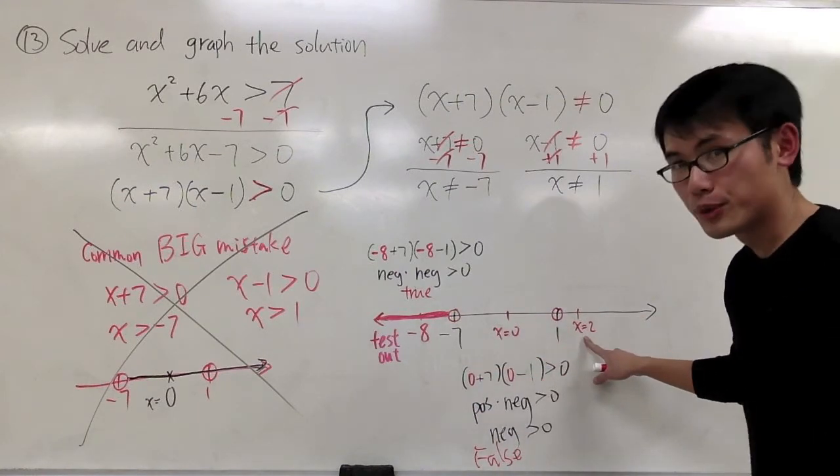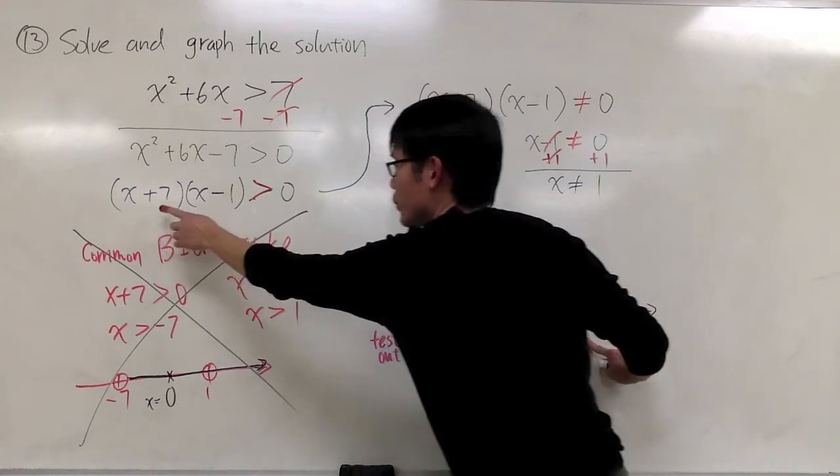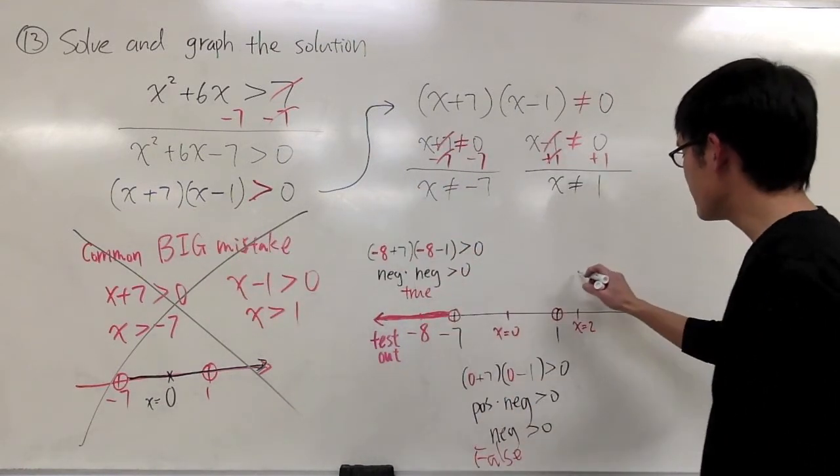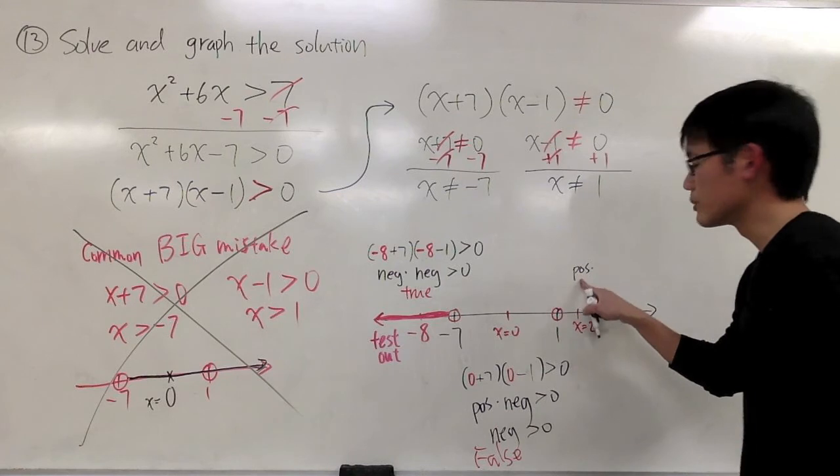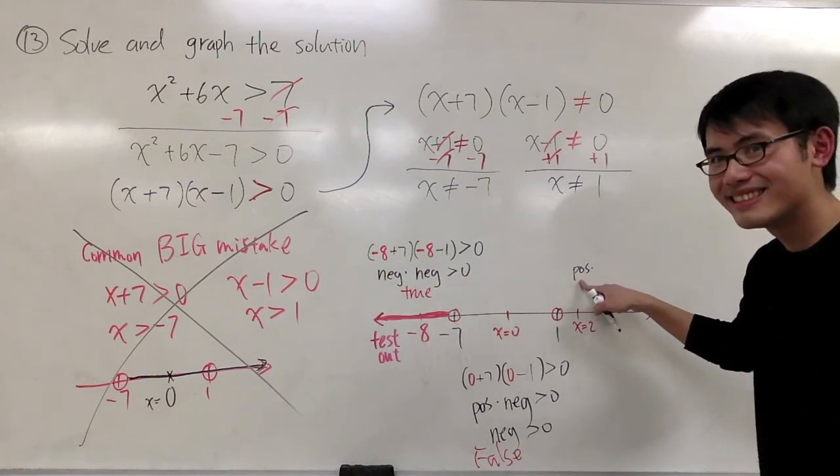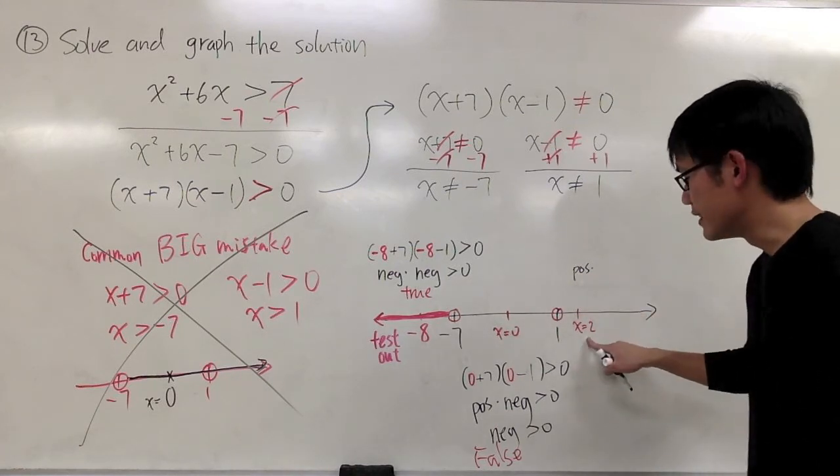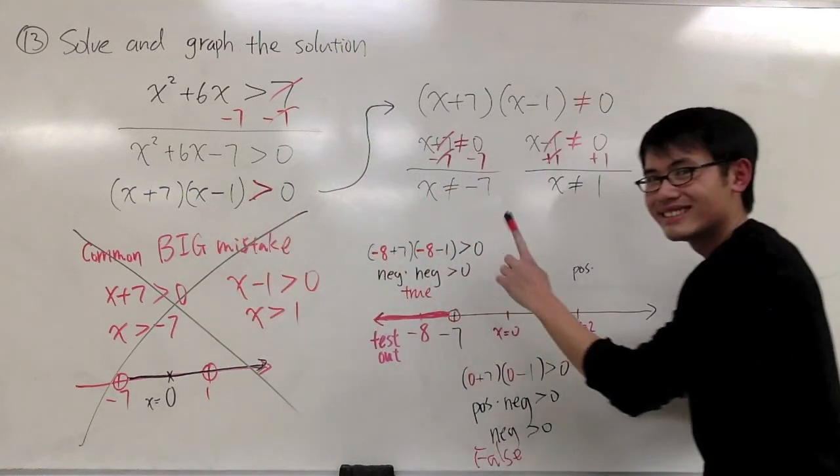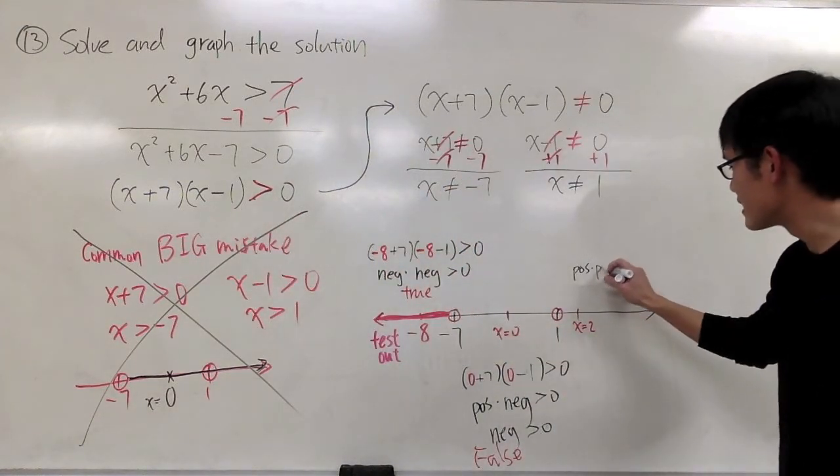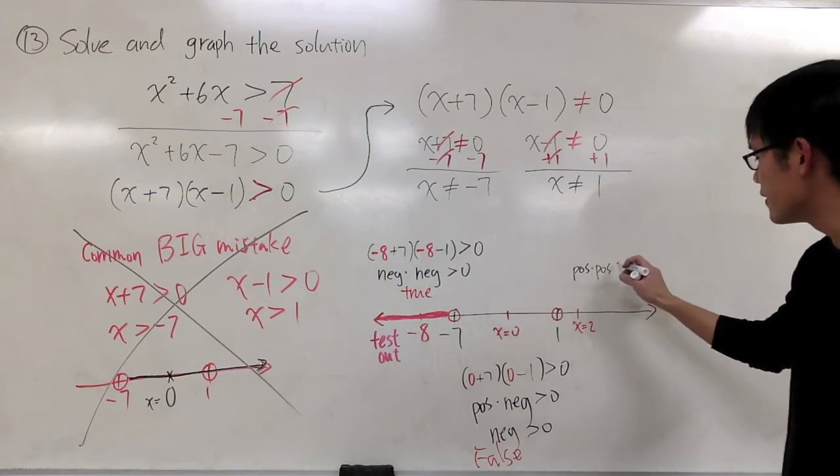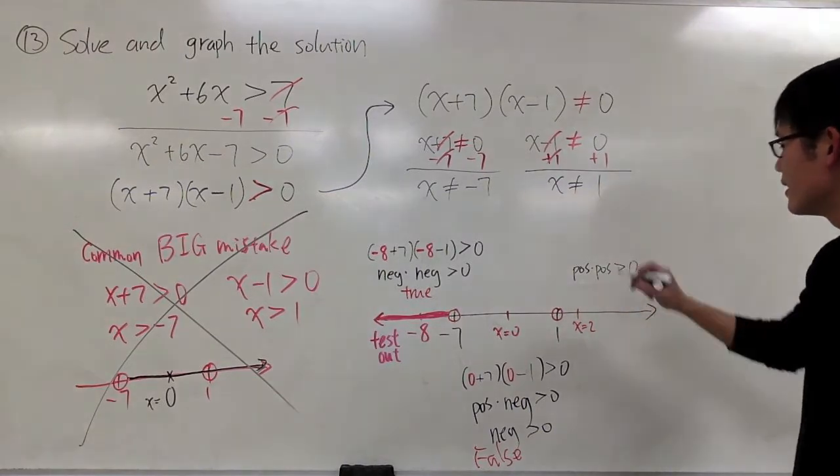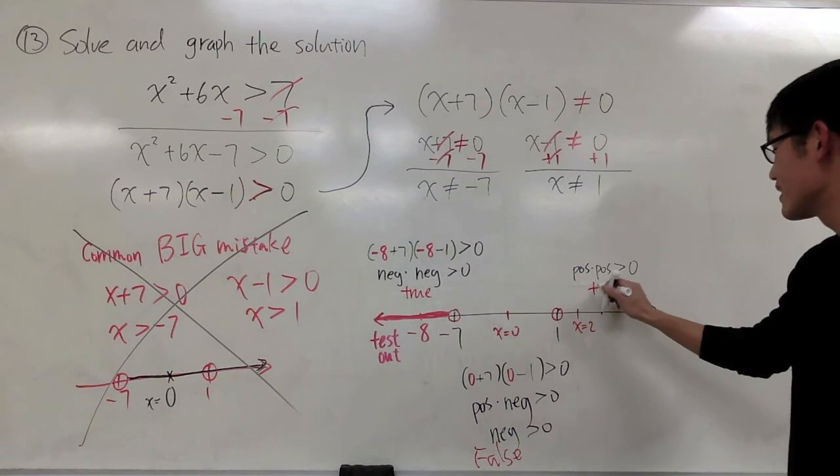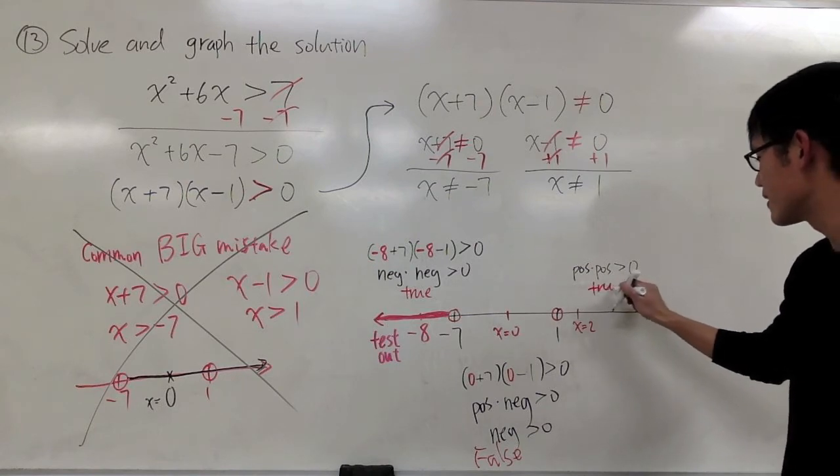If x is equal to two, I will get two plus seven, which is nine, which is positive. I can just put down positive to keep in mind. If x is equal to two, two minus one is equal to positive one. So once again, it's positive. Positive times positive is greater than zero. That's correct. That's true.